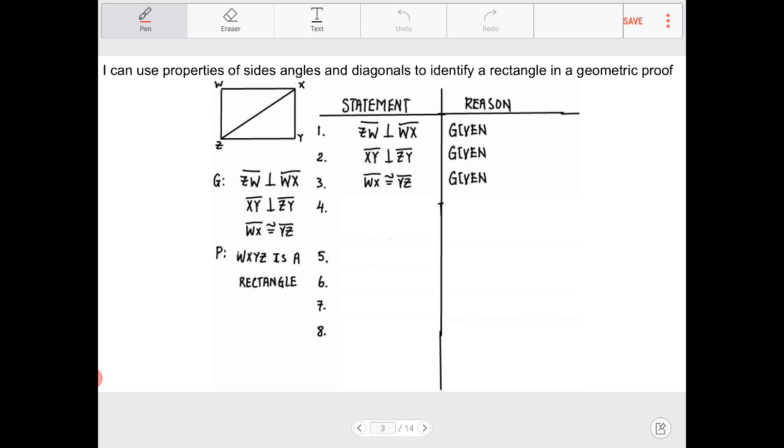So welcome back everyone, hopefully everyone got a chance to take a look at this. My number one advice for anybody who is tackling any kind of geometric proof or any kind of geometry problem is to draw all over the diagram and to come up with relationships that are not obvious with just the information that's provided.